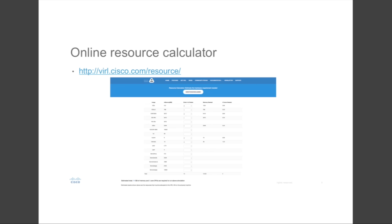A new resource calculator is up and available at virl.cisco.com/resource. It's a simple calculator where you dial in a particular simulation — list the number of machines, say IOSvL2 nodes or XRv 9000s — and the system gives you an estimate of the memory and CPU required. Bear in mind this is only an estimate, as it depends on what else is running on your system, and features like the over-commit feature will affect the number of virtual machines you can run.